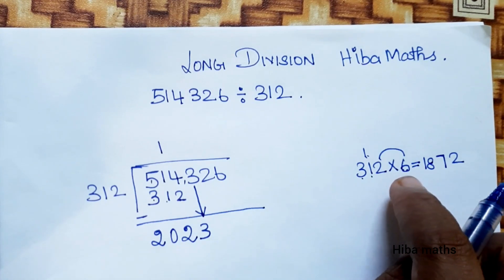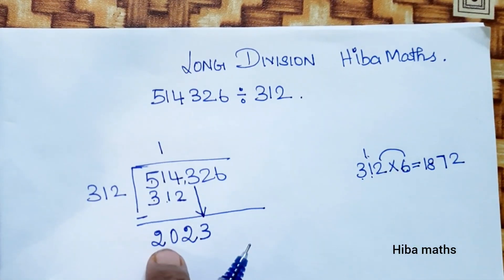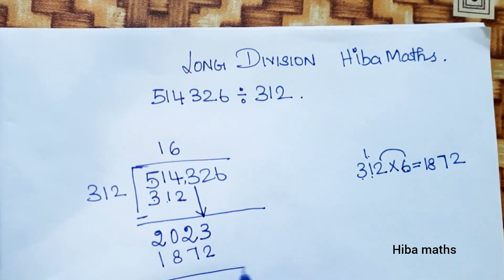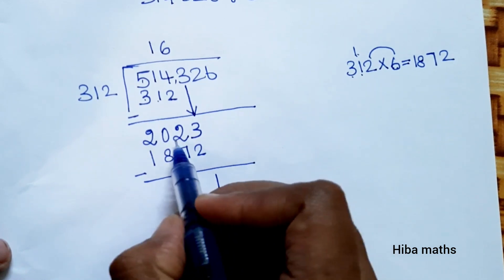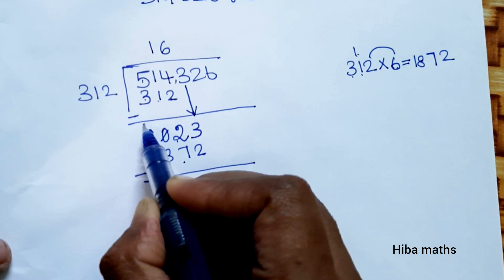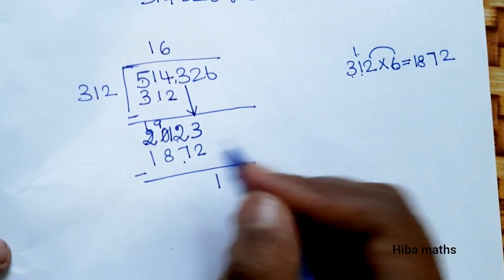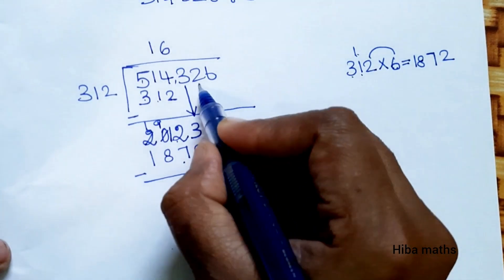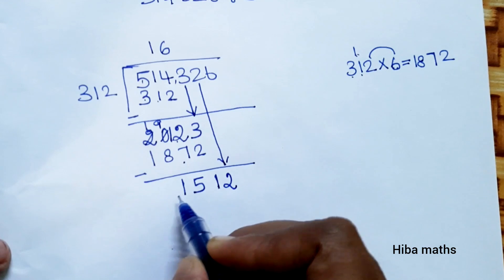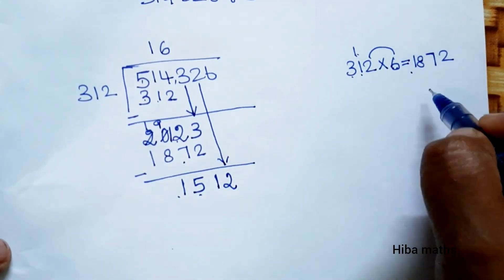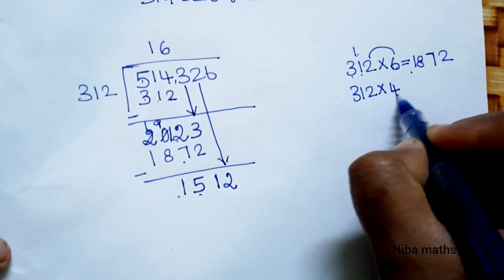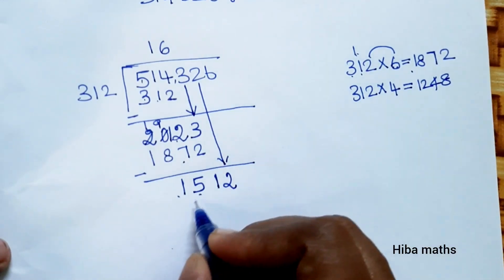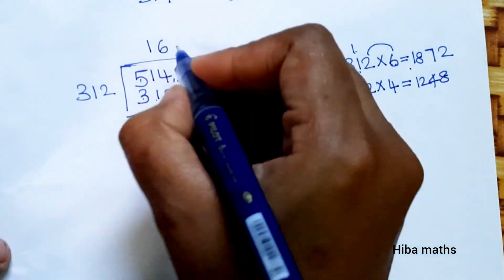Now 7 times: 6 times 1 is 6, 8, 7, 2. Now we have minus: 3 minus 2 is 1, 2 minus 0 is 2 — wait, 7 minus 10 is... now 19 minus 1 is... bringing down: 312 into 4 — 4 times 2 is 8, 4 times 1 is 4, 4 times 3 is 12.